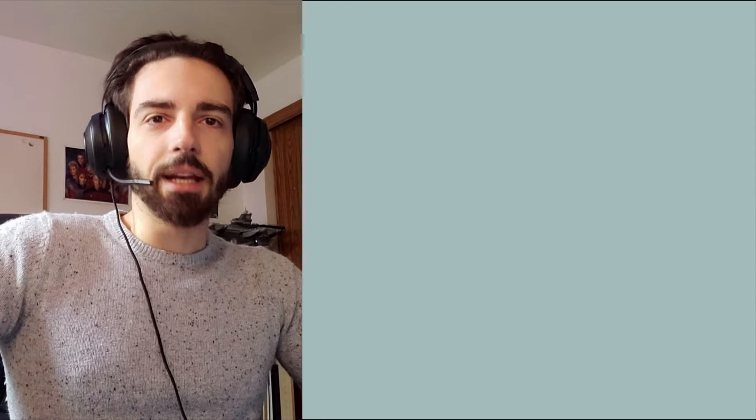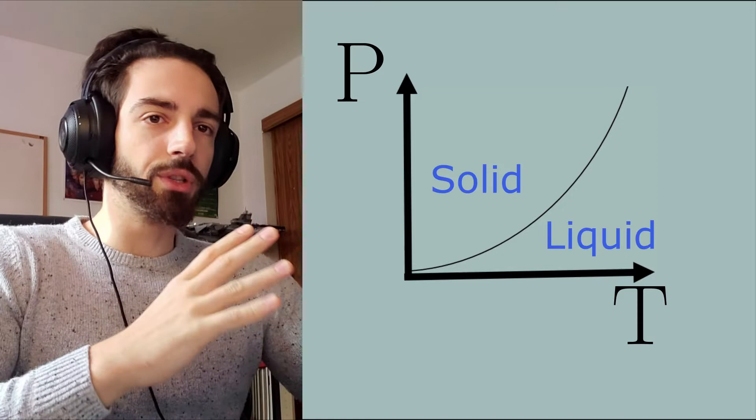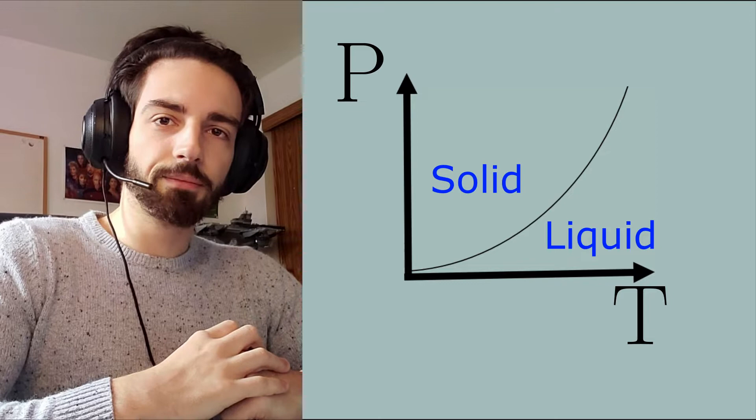In the last video I introduced the idea of phase transitions and in particular those which occur as a result in the change of the thermodynamic parameters pressure and temperature. We've seen that we can make a phase diagram which describes the regions in this pressure-temperature space where the substance is in different phases, and these regions are separated by curves which we can simply call phase separation curves.